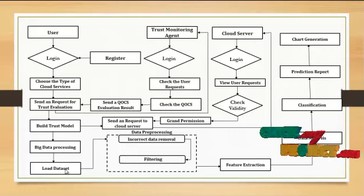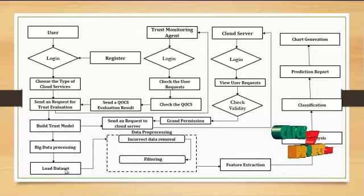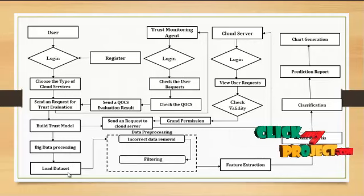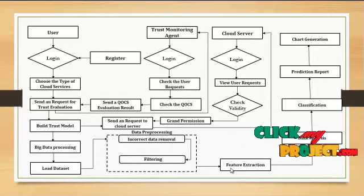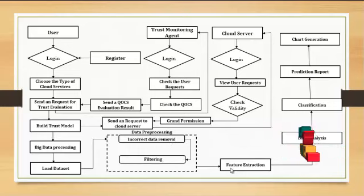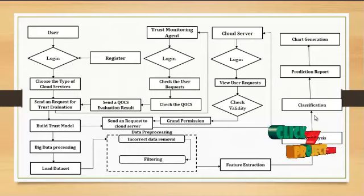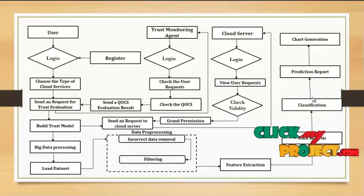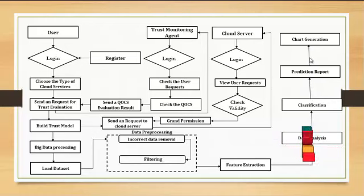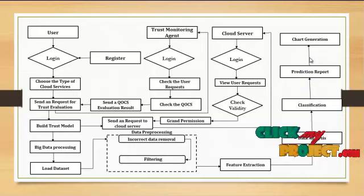After getting permission from the cloud services, the user will process the big data on the cloud. First, the dataset is loaded — here, an EEG signal dataset is loaded for predicting whether a particular person is in a normal or abnormal mindset. After loading the dataset, the data is pre-processed to remove unwanted data, followed by feature extraction of relevant features. It will then classify normal and abnormal persons and show a prediction report with a chart generated based on the person's mindset.